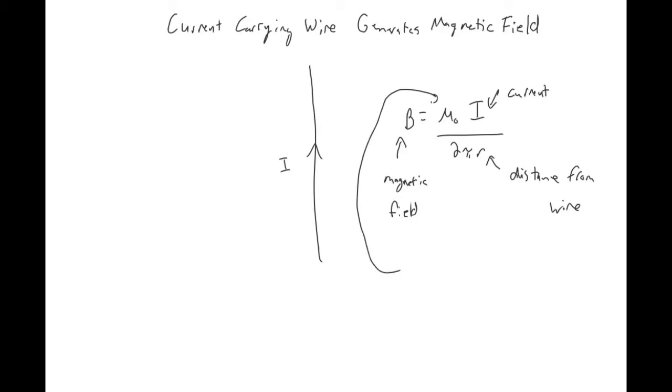And then mu naught is a new thing that you have not seen. This is the permeability of free space, which is not to be confused with the epsilon naught that we saw earlier, which was the permittivity of free space. So they are completely different concepts. One is basically how easy is it for an electric field to exist in this area, and then the other is how easy is it for a magnetic field to exist.